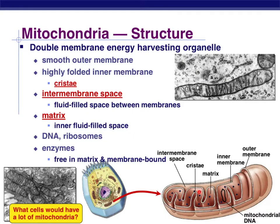Remember, mitochondria have their own DNA, their own ribosomes, and their own enzymes, which supports the theory of endosymbiosis — that the ancient relative or ancestor of this mitochondrion was once a free-living prokaryotic cell of its own, capable of fulfilling its own needs.